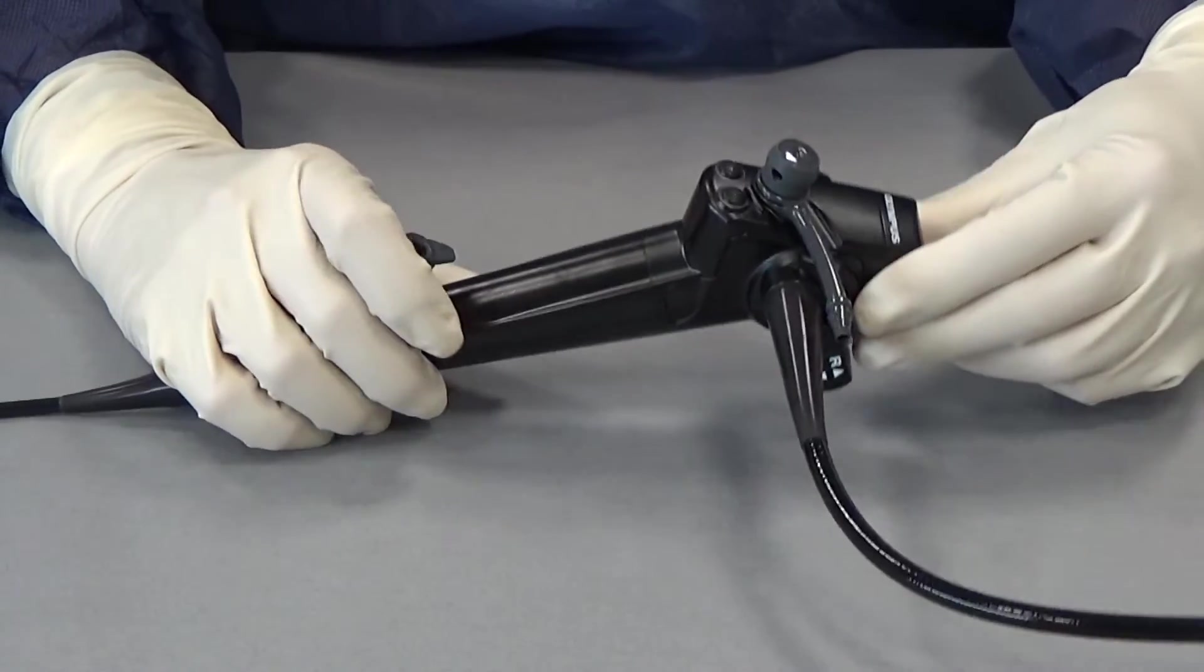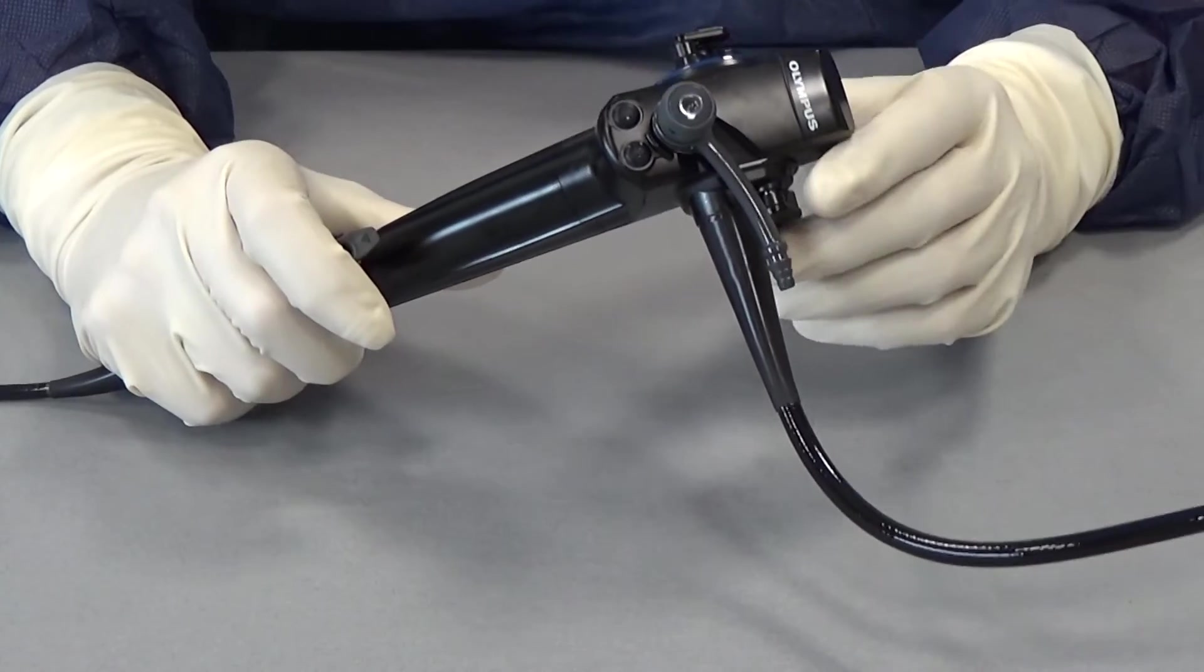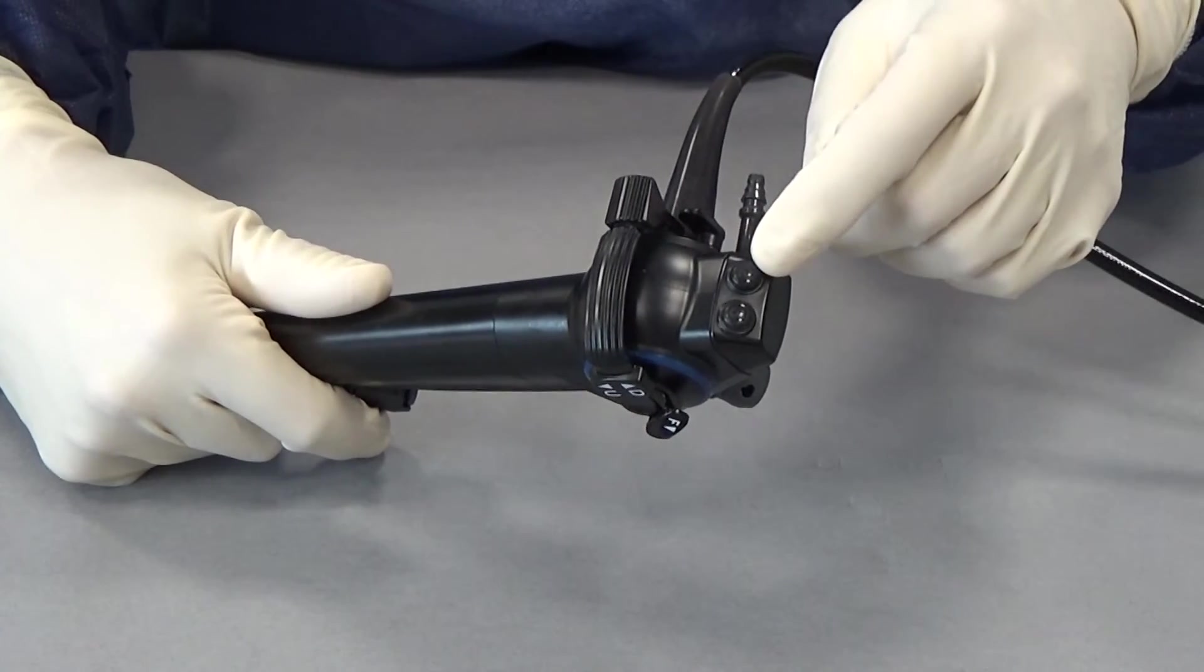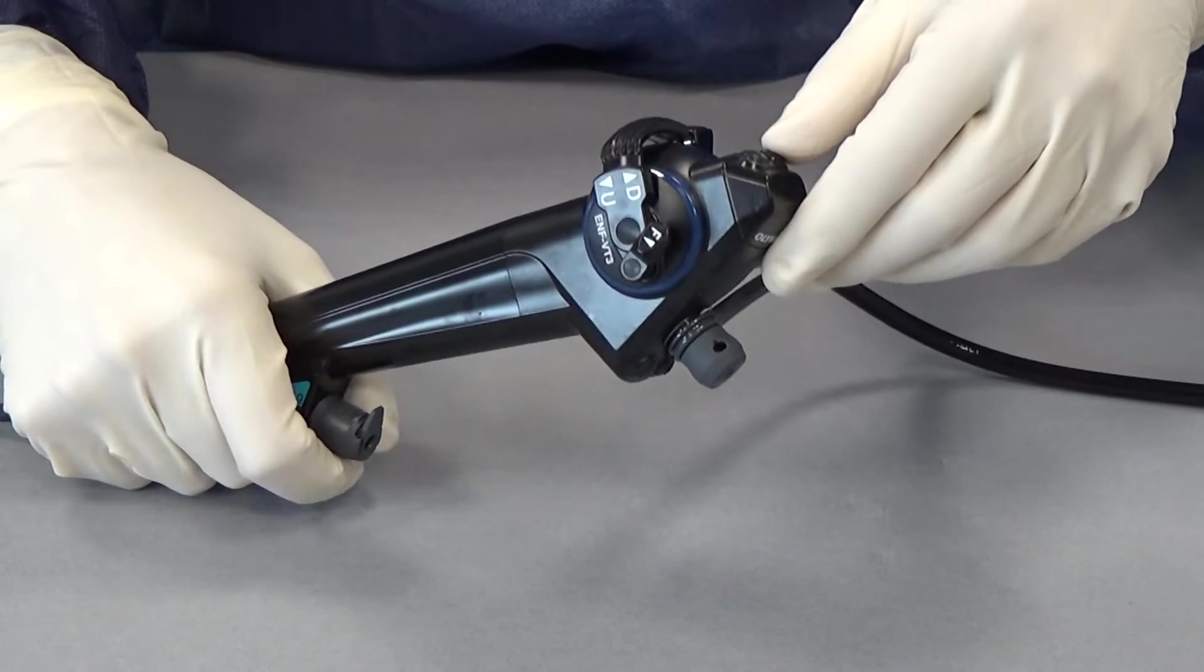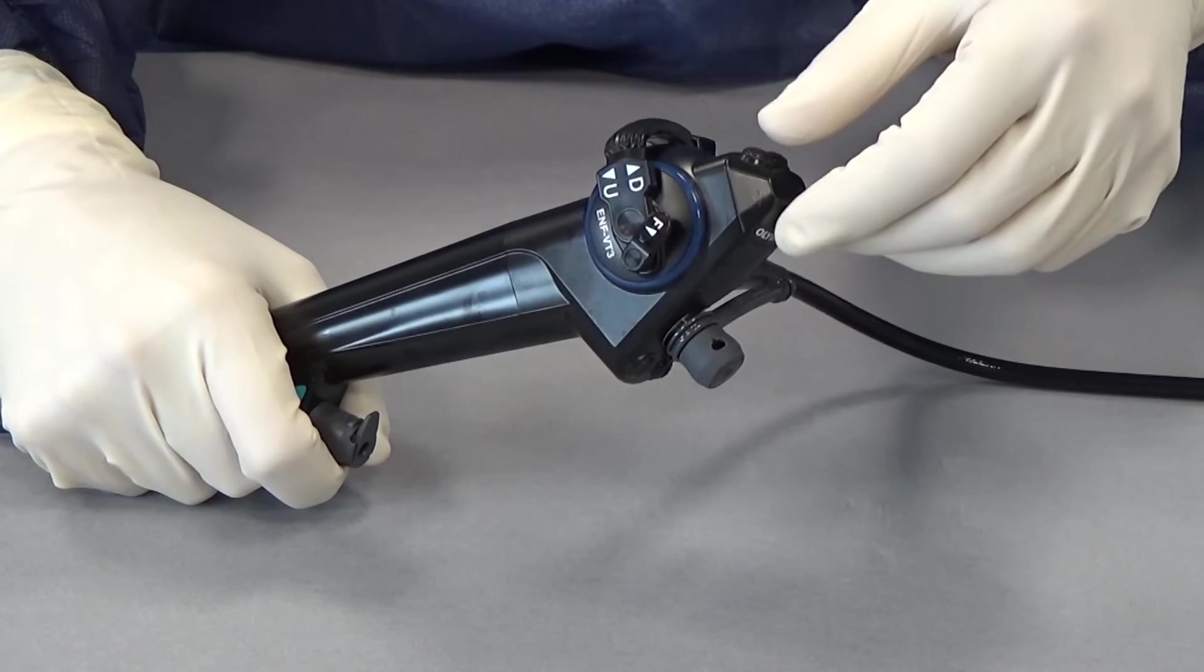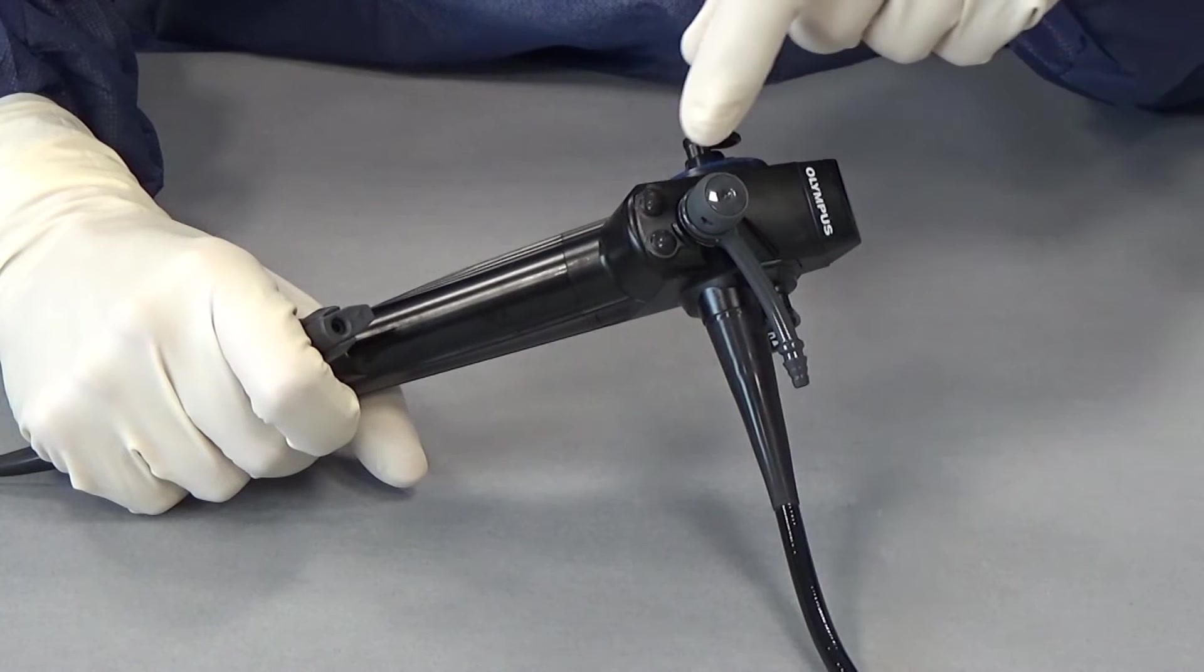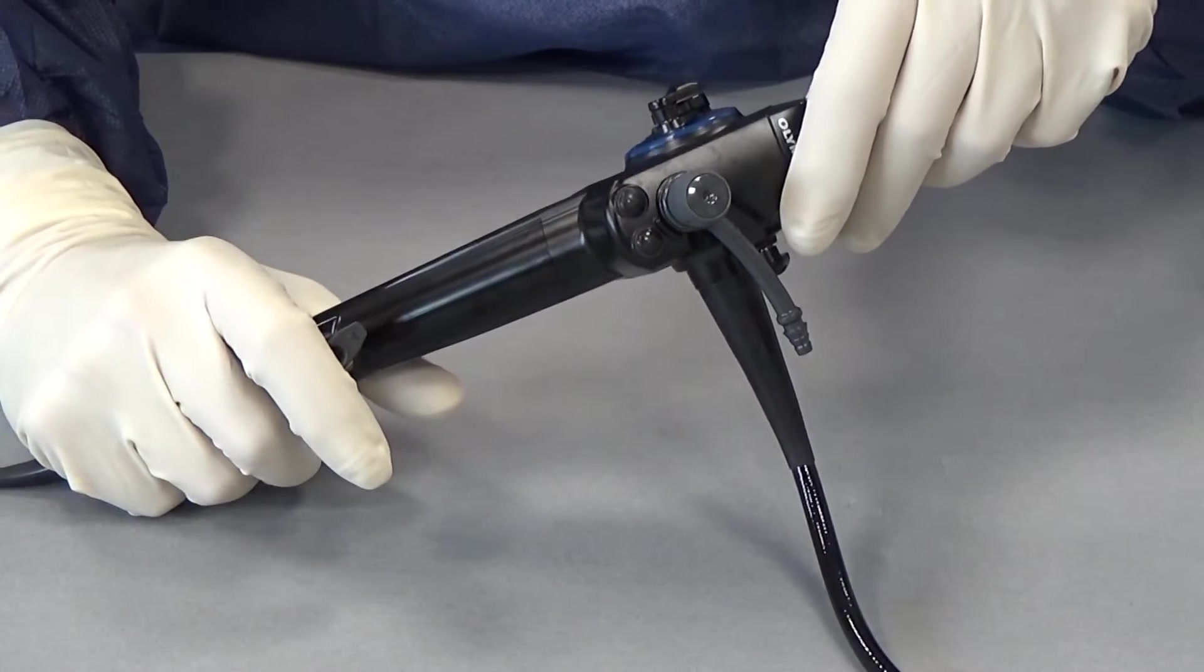We also have some other little buttons on here. This endoscope has four buttons, one, two, three, four, and you can control these buttons and you can individually put different kinds of tasks on these buttons. For instance photo, or start and stop the video, stills, etc.